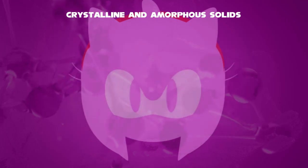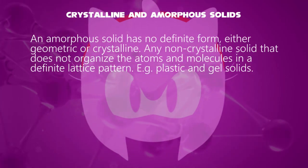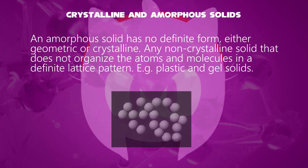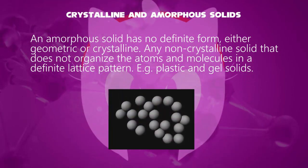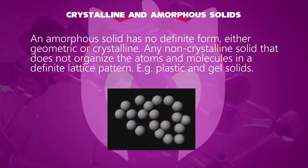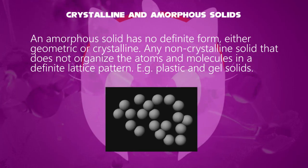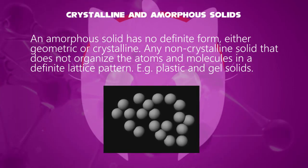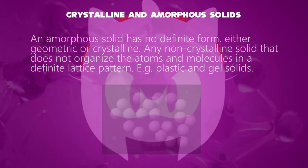On the other hand, to talk about amorphous solids. Amorphous solid is any non-crystalline solid that does not organize the atoms and molecules in a definite lattice pattern. For example, such as plastic or gel.